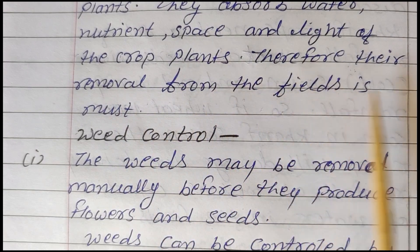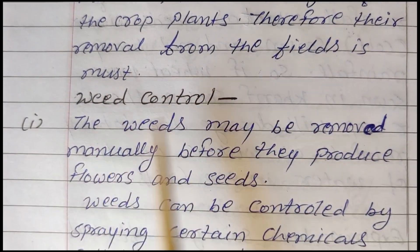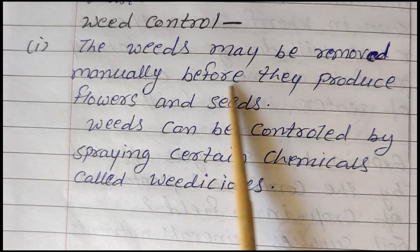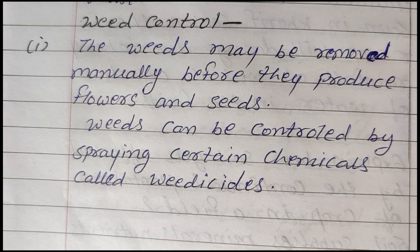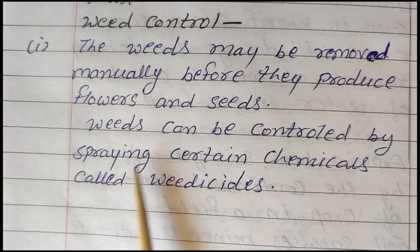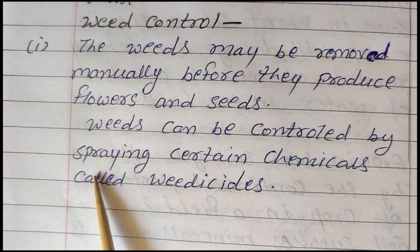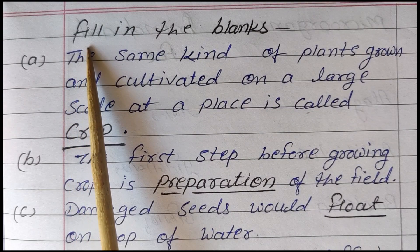Therefore, their removal from the field is essential. Weed control (Kharpatwar niyantran): Weeds may be removed manually before they produce flowers and seeds. Weeds can also be controlled by spraying certain chemicals called weedicides. (Kharpatwar nashak chemicals ka fasloin par chidkav karte rehna chahiye.)